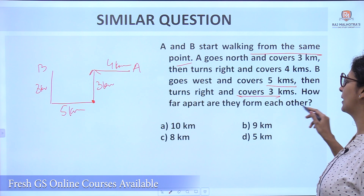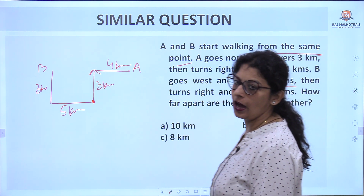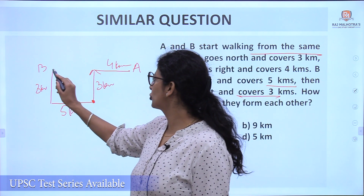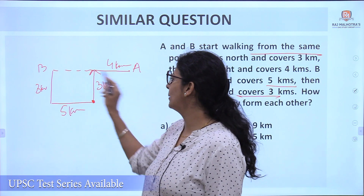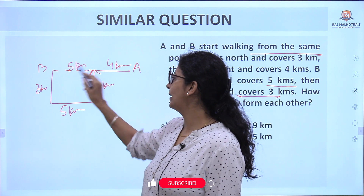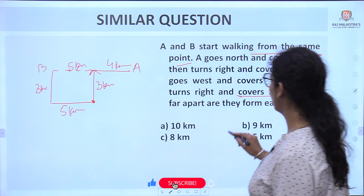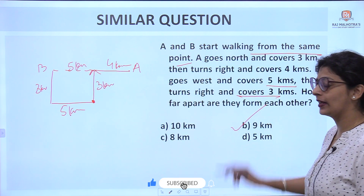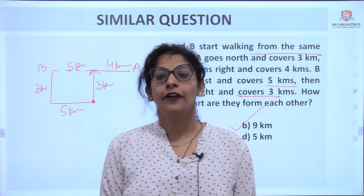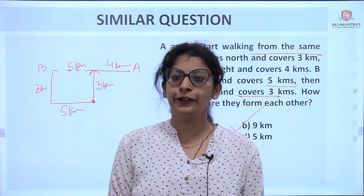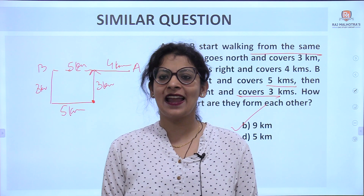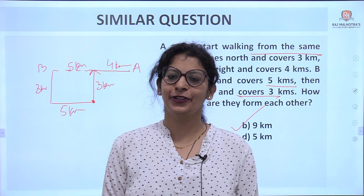The question is: how far apart are A and B from each other? The shortest distance: this side is 4 and this side is 5, so 4 plus 5 equals 9 kilometers. The answer is 9 kilometers. For more videos please subscribe to our channel, share and like our video. Thank you.